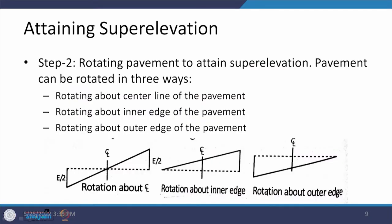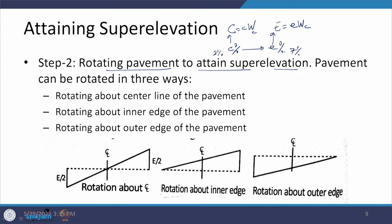Now let us look at step 2 — rotating the pavement to attain superelevation. So far we attained C percent; now we want to attain E percent. The total raise changes from C times carriageway width to E times carriageway width. To do this rotation there are three cases: case 1 is rotating about the centerline of the pavement, case 2 is rotating about the inner edge, and case 3 is rotating about the outer edge.